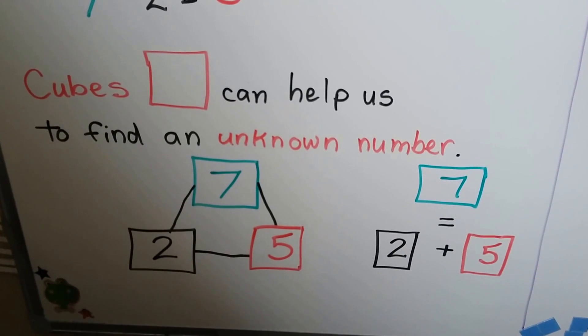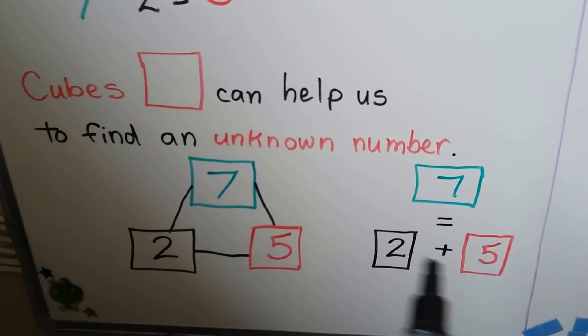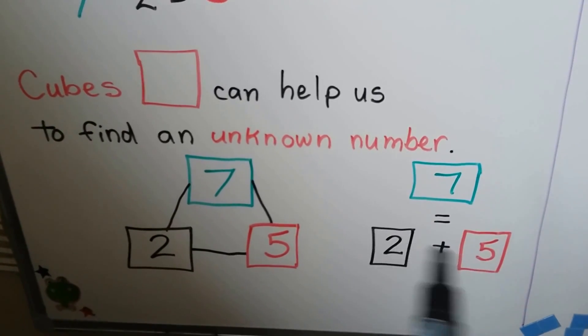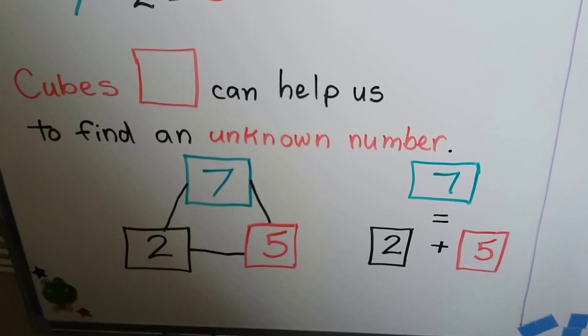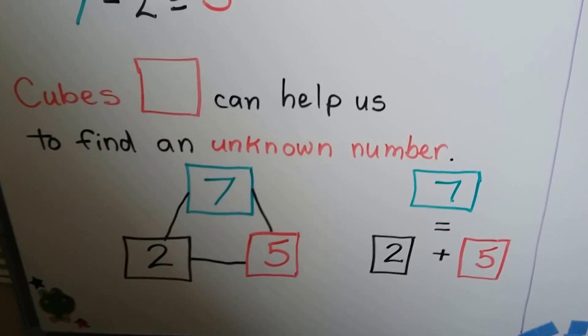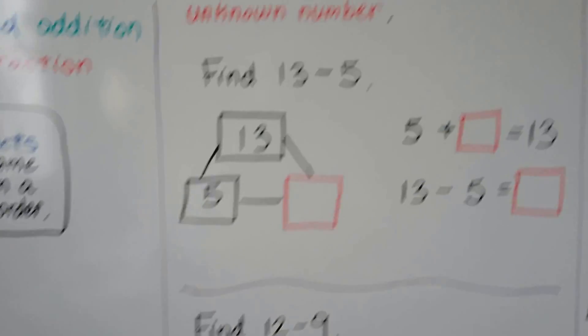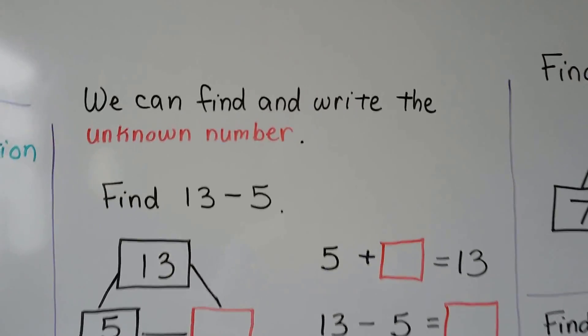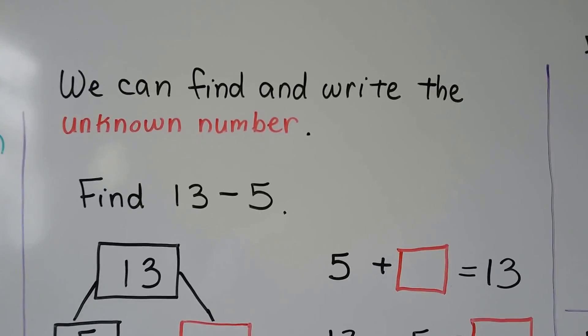When we add these two together, it will equal the number on top. If we have a 2 and a 5 down here and we add them together, it's going to equal the 7 on the top. We can find and write the unknown number.